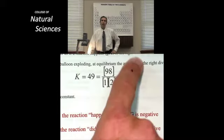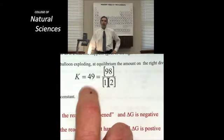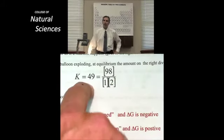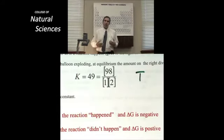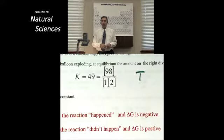Those together ratioed to make this value I can find in the back of the book. This value right here found in the back of the book, which is temperature dependent, is the equilibrium constant for that exploding hydrogen balloon.